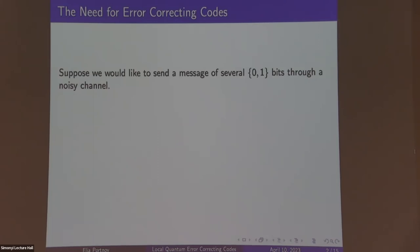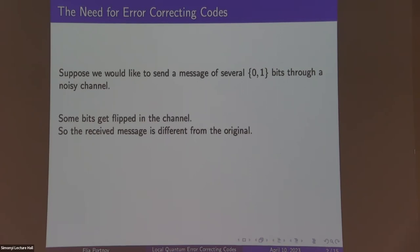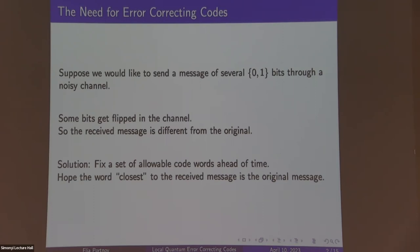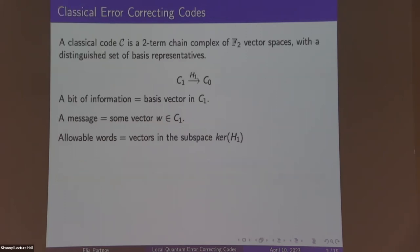Why do we need error correcting codes? Suppose we'd like to send a message of several zero-one bits through a noisy channel — n bits, zero and one. As the bits move through the channel, some of them get flipped because of some noise or other influence, and the received message at the other end is different from the original. We need a way to recover the original. One solution is to fix a set of allowable code words ahead of time — a set of messages that both the receiver and the sender know — and we hope that the closest code word to the received message is the original.